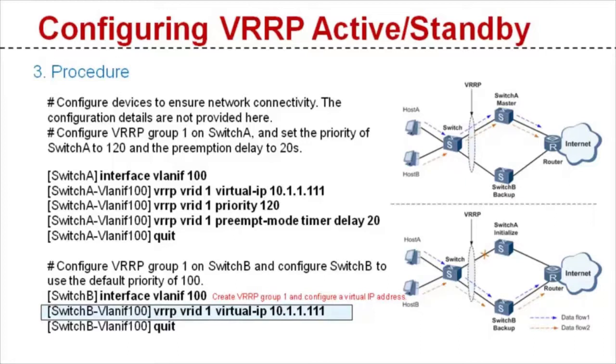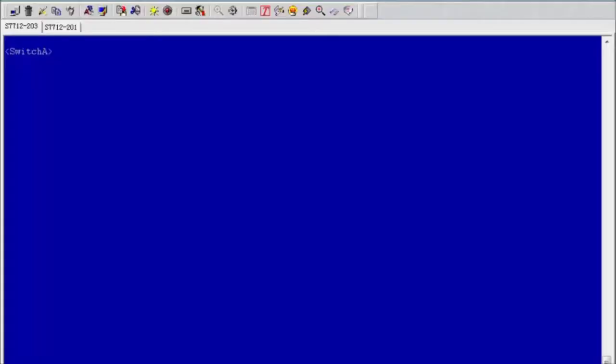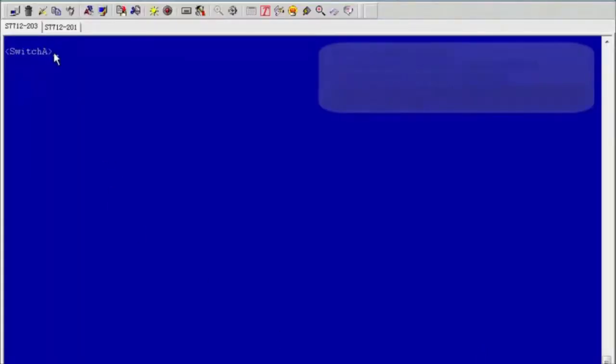Configure switch B to use the default priority of 100. Now let's show you how to configure VRRP on the device.